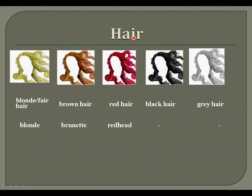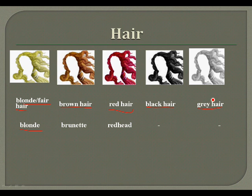Now let's speak about hair color. We say she or he has blonde or fair hair, or she is blonde. They can have brown hair, red hair, black hair, or gray hair. We don't say white hair — we say gray hair.